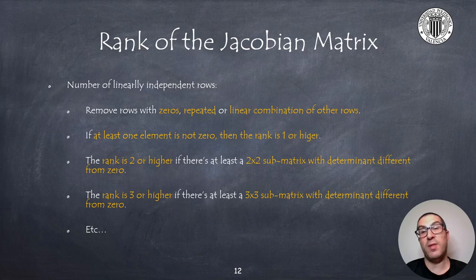We start by finding if there's at least one element which is different from zero, then we know at least that the rank will be 1 or higher. Then we analyze if there's a 2 by 2 sub matrix with a non-zero determinant and then again we can say that the rank is 2 or higher and so on.